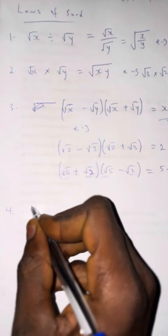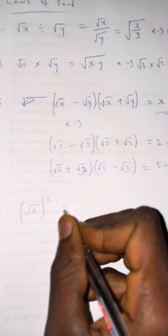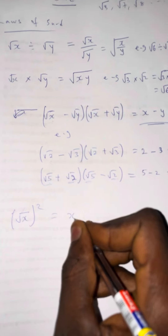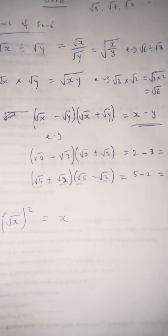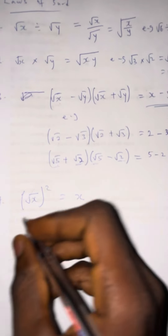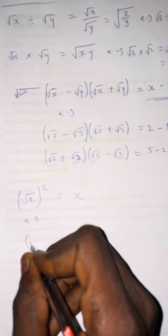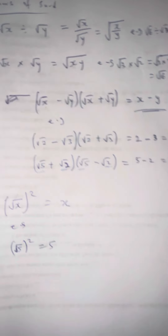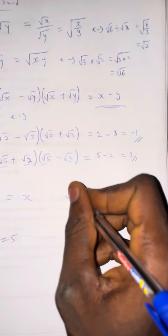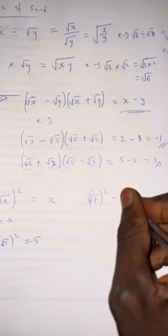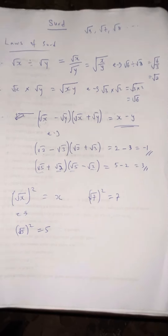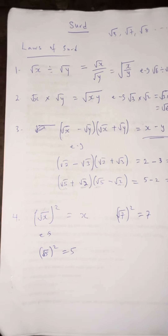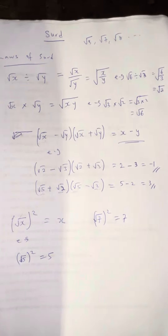Law number 4: if you have the square root of x squared, the square root cancels the square, so the answer is equal to x. For example, root 5 squared gives us 5, and root 7 squared gives us 7. You can verify this on the calculator. These are the laws of SWORD.